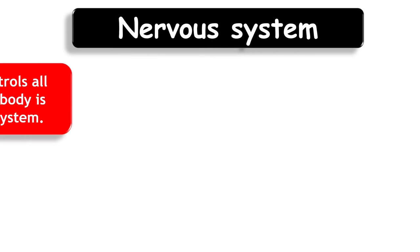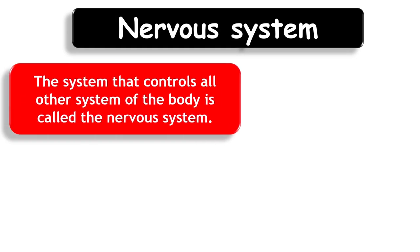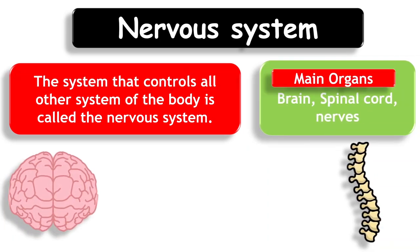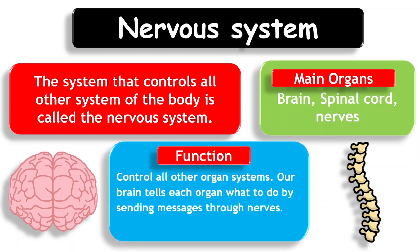Nervous System. The system that controls all other systems of the body is called the Nervous System. Main organs of the system are Brain, Spinal Cord, and Nerves. Function: It controls all other organ systems. Our brain tells each organ what to do by sending messages through nerves.